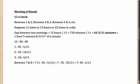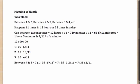Now if someone asks you between 7 and 8 when will the hands of a clock meet, you multiply 7 by the interval formula. 7 × 1 = 7, and 7 × 5 = 35, giving you 7:35 35/11. Since 35/11 = 3 and 2/11, this becomes 7:38 2/11. That is when the hands meet between 7 and 8.